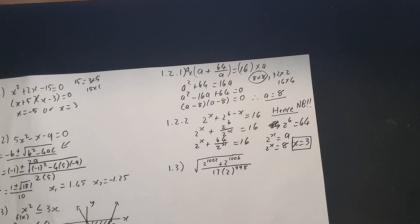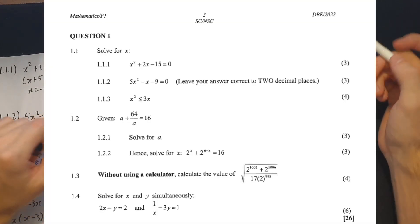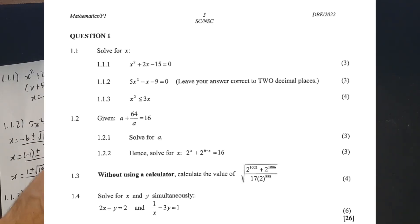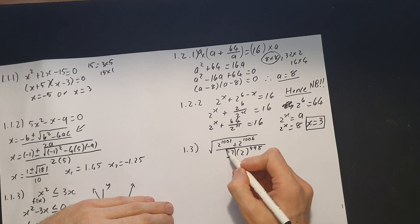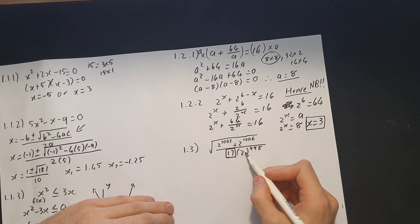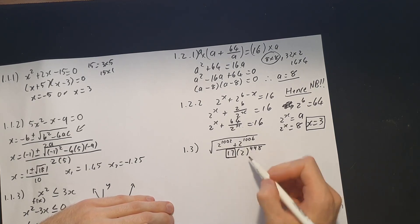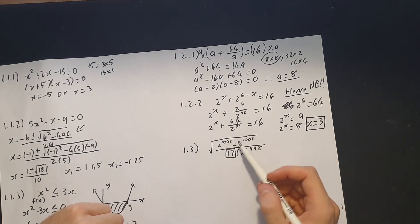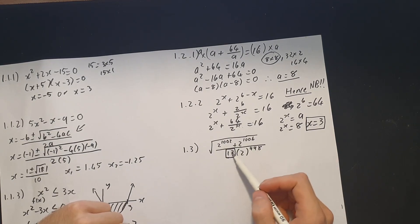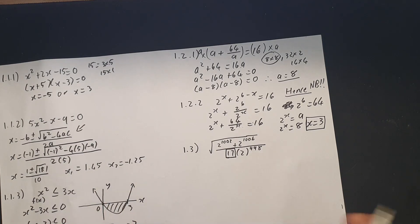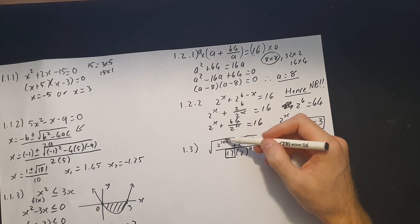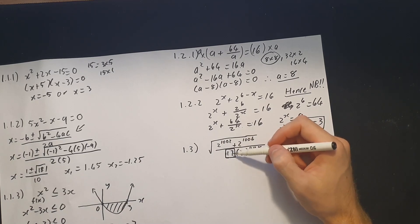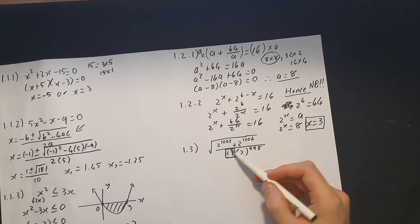Now let's look at 1.3 — exponents. The key thing is that 2 is the base for all three numbers. At the top we need to generate a factor of 17 to cancel it out. Whenever you see these kinds of problems you have to create this number so it cancels — because 17 can't break into a base of 2.